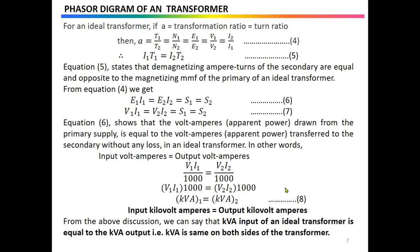Now we calculate the turns ratio. For an ideal transformer, if 'a' is the transformation ratio or turns ratio, then a = T1/T2 = N1/N2 = E1/E2 = V1/V2 = I2/I1. For voltages and EMFs it is a 1-to-2 ratio, whereas for current it is inversely proportional. Using this relation, cross-multiplying gives I1·T1 = I2·T2, or equivalently I1·N1 = I2·N2, as you have studied in the earlier video lectures.